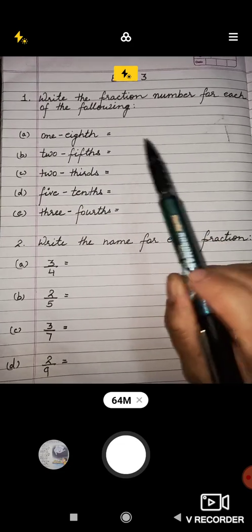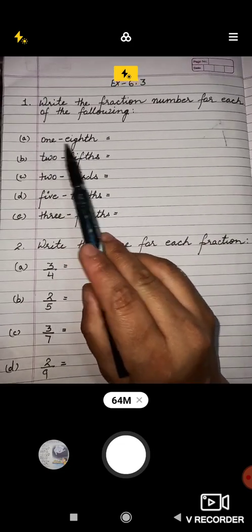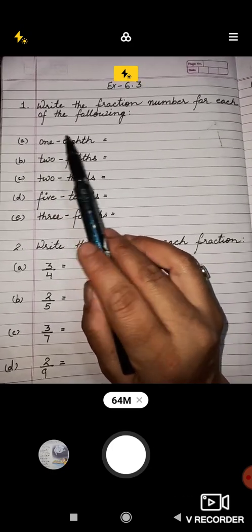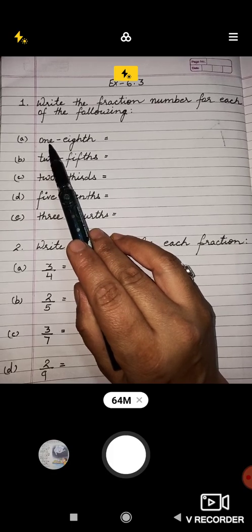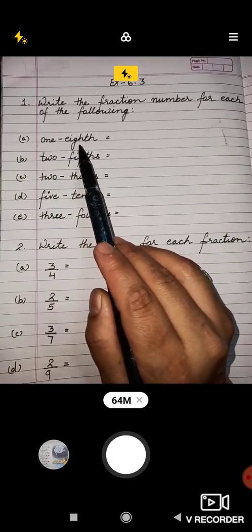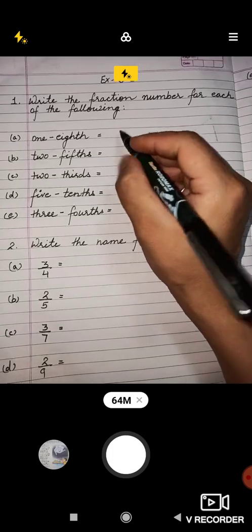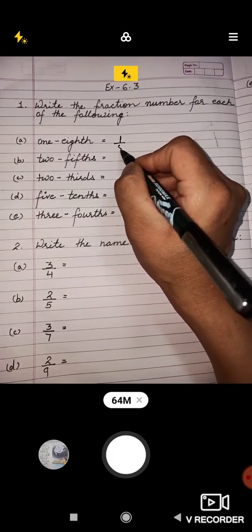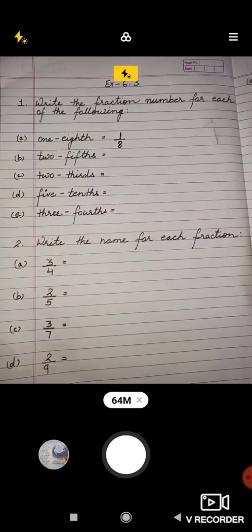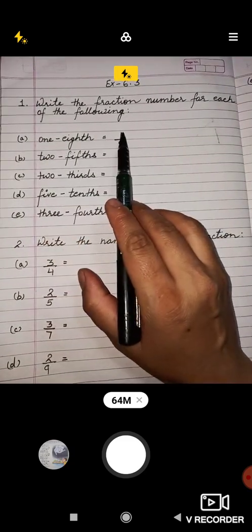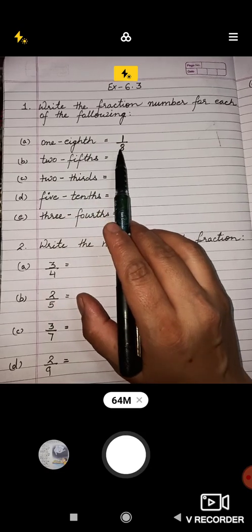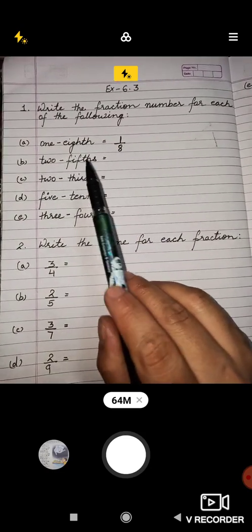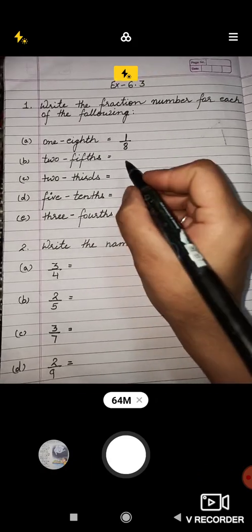So first is one-eighth. One-eighth means one is the numerator and eight is the denominator, so you will write it one upon eight. Then second, two-fifths - so two is numerator and five is denominator, two-fifths.